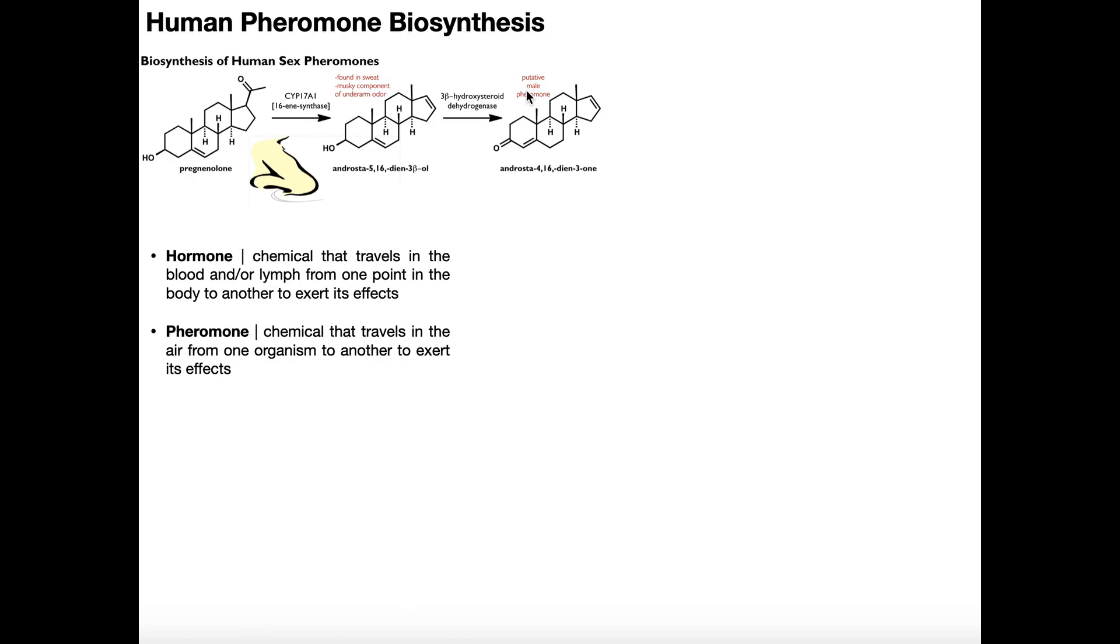Now, if you are the armpits, the axilla, the pathway stops here. So the pathway does not progress beyond this in the axilla. However, if you're the testes or the ovaries, the pathway will take this compound, androstadienone, and process it further.